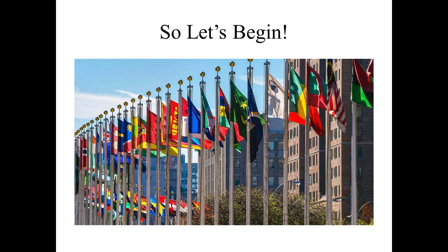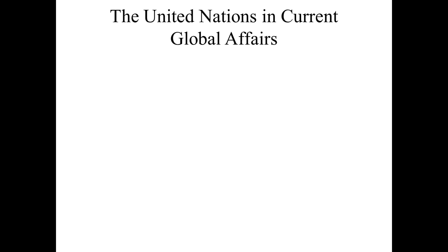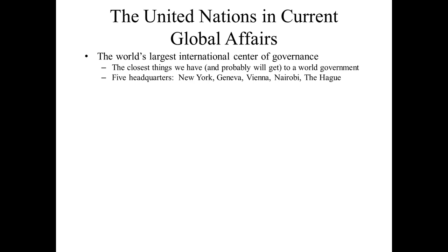This class looks specifically at the United Nations in current global affairs. Many of you are familiar with the UN — it is the world's largest international center of governance, bar none, and the closest thing that we have — and probably will ever get — to a world government. The UN is not poised to become a world government; we will not have a planetary parliament. The UN is pervasive and ubiquitous on the international level. There are five main headquarters — not just in New York, the big one, but also in Geneva, Vienna, Nairobi, and The Hague in the Netherlands.